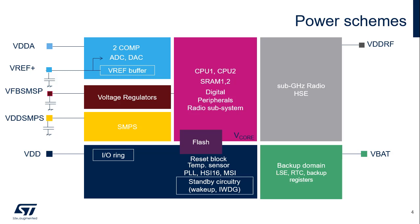STM32WL5 devices have several independent power supplies, which can be set at different voltages or tied together. The main power supply is VDD, supplying all IOs, the reset block, temperature sensor, and all internal clock sources. In addition, it supplies the standby circuitry, which includes the wake-up logic and independent watchdog, as well as the radio. VDD is monitored by the BOR circuitry.